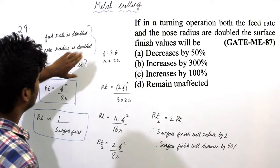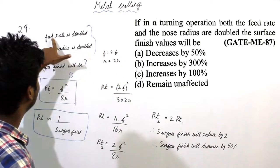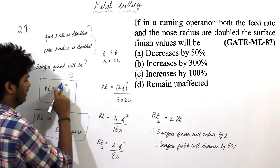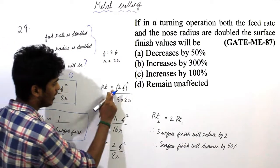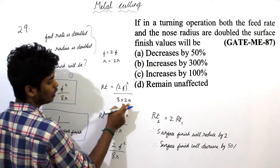Coming to case 2, f is equal to 2f, r is equal to 2r. Nose radius is doubled as well as feed rate is also doubled. Rt is equal to, instead of f, I am taking 2f squared plus 8 into r is 2r.